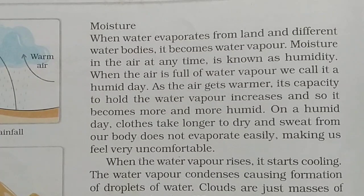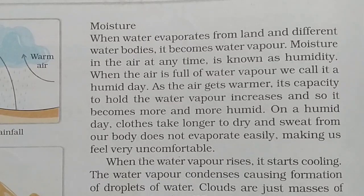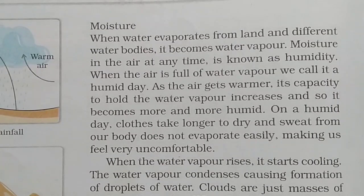When water vapor rises it starts cooling. The water vapor condenses, causing formation of droplets of water. Clouds are just masses of such water droplets. When these droplets of water become too heavy to float in the air, they come down as precipitation — the water droplets grow heavy, clouds can no longer hold them, and they fall down as precipitation.